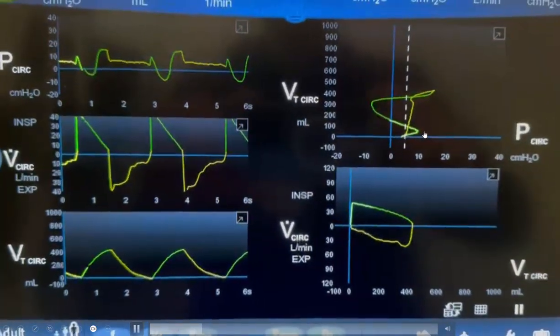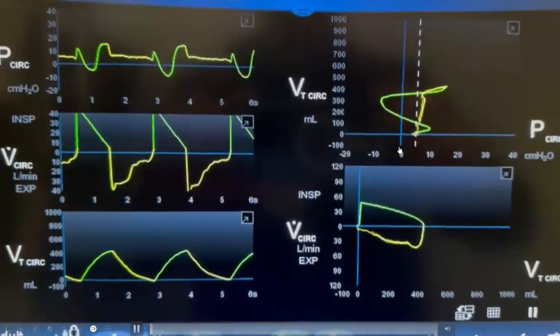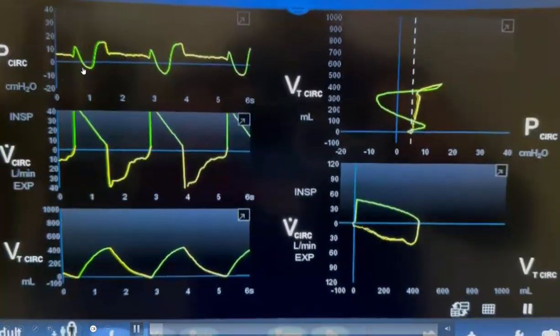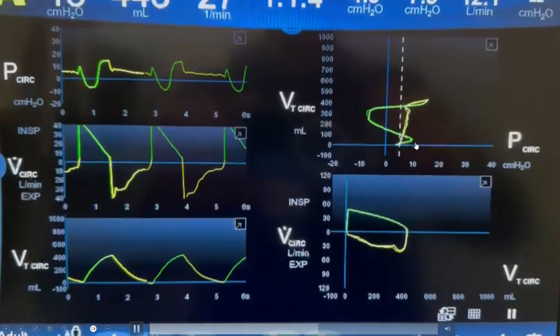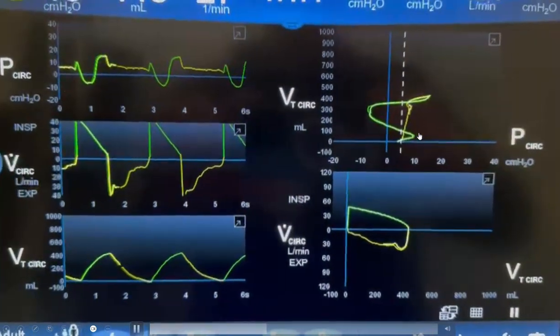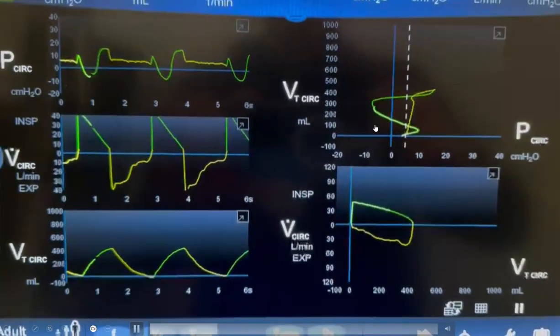Then the pressure starts to go up to around 10 centimeters of water. This point here, the increase in the pressure from this point to this point, correlates with the initial rise in the pressure here. Then the pressure is pulled down—it goes down from 10 centimeters of water all the way to minus 7 or minus 8 centimeters of water.